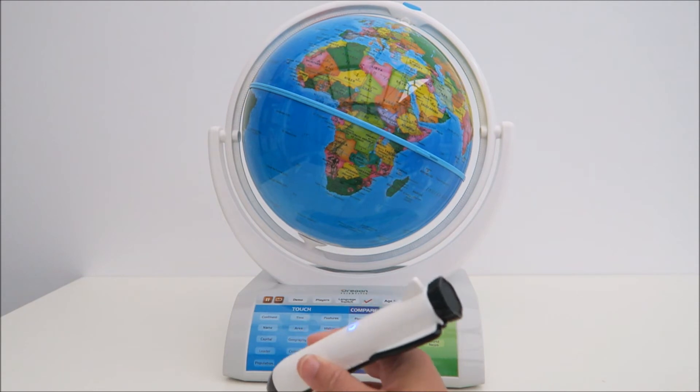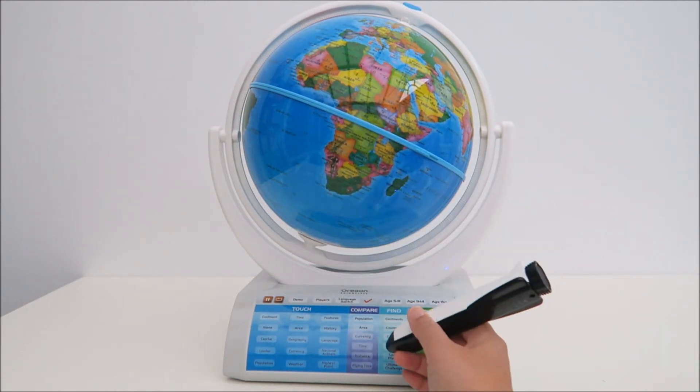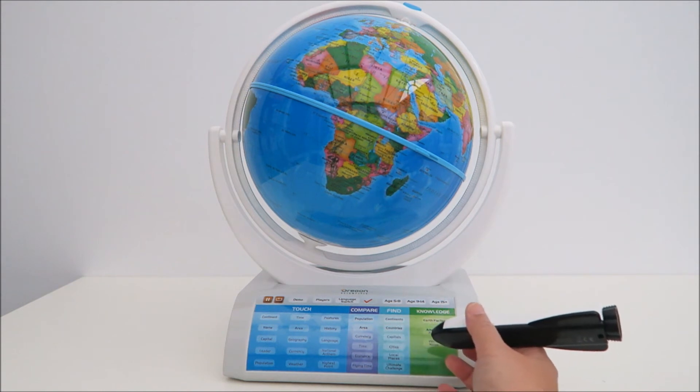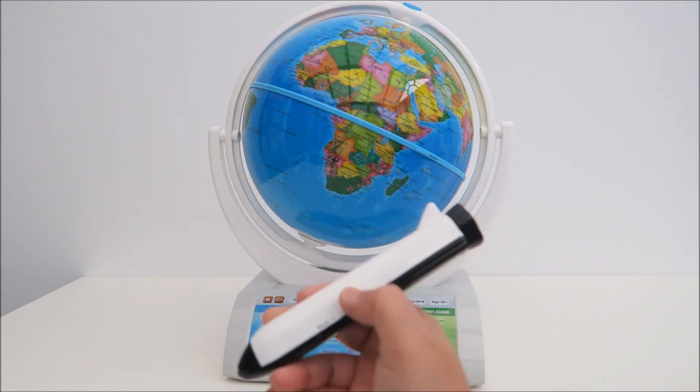Now, turn on the pen and then I'm going to select the age group. So for example, I do five to eight and I want to play a game, like maybe finding the country. Let me turn it up a bit.